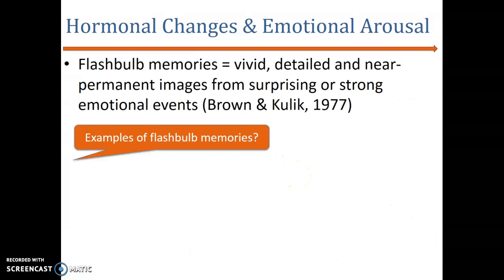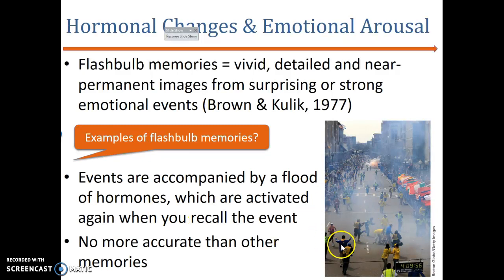Understanding that is also an important process in the study of memory. When you think about events that happen in our lives — especially a shooting or a bombing — those are events that actually form clear, vivid pictures. They stay with us in our mind. These are emotional events that produce emotional arousal and cause hormonal changes. That is called flashbulb memories.